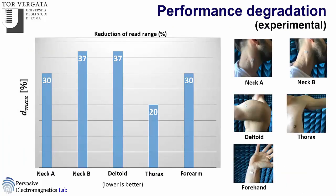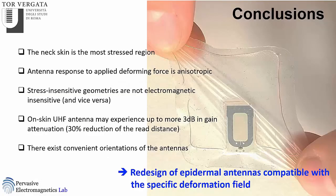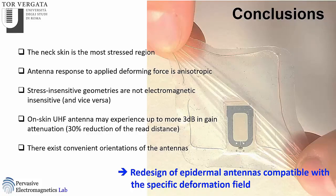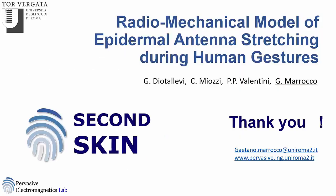In conclusion, the behavior of the antenna over the body is dependent on position. The read distance reduction can be up to 30%. The thorax is the best placement if you need to attach an antenna there. The deformation is anisotropic and the variation of gain is also anisotropic. The neck is the most stressful position, with gain variation up to 3 dB. Stress-insensitive geometries are not electromagnetically insensitive, and vice versa. Therefore, we probably need to redesign epidermal antennas to be compatible with the stress field for the specific placement. Thank you for your attention.